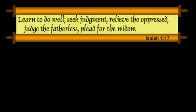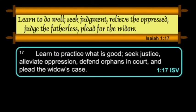Verse 17 King James: "Learn to do well. Seek judgment. Relieve the oppressed. Judge the fatherless. Plead for the widow." After the negative exhortation of the preceding verse, Isaiah now gives five positive exhortations, the first of which lays the foundation for the remainder. The ISV: "Learn to practice what is good. Seek justice. Alleviate oppression. Defend orphans in court. And plead the widow's case."